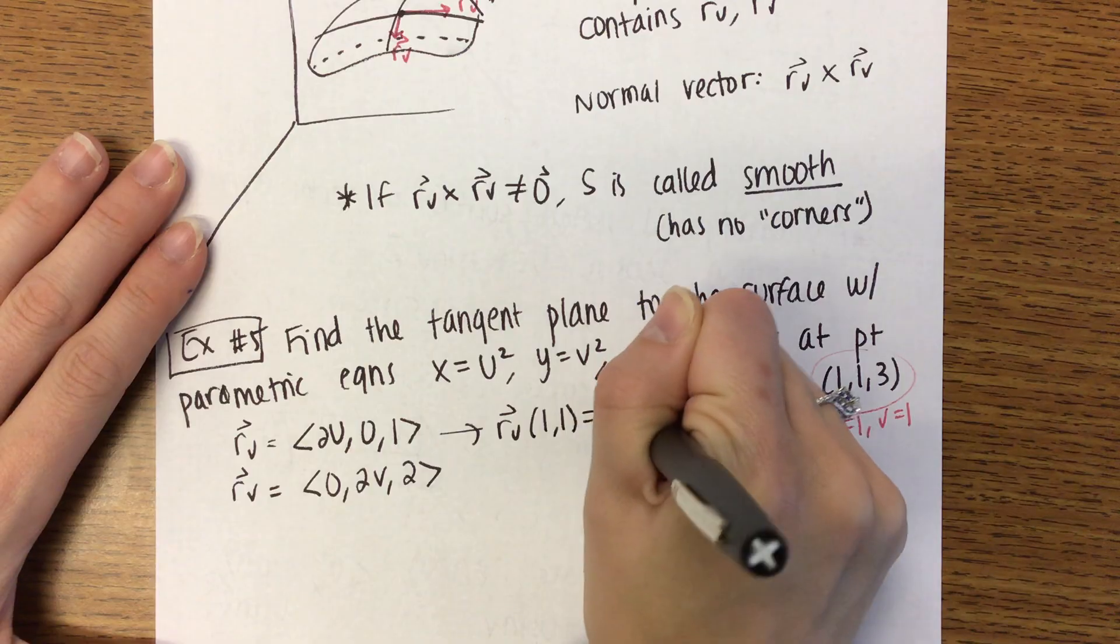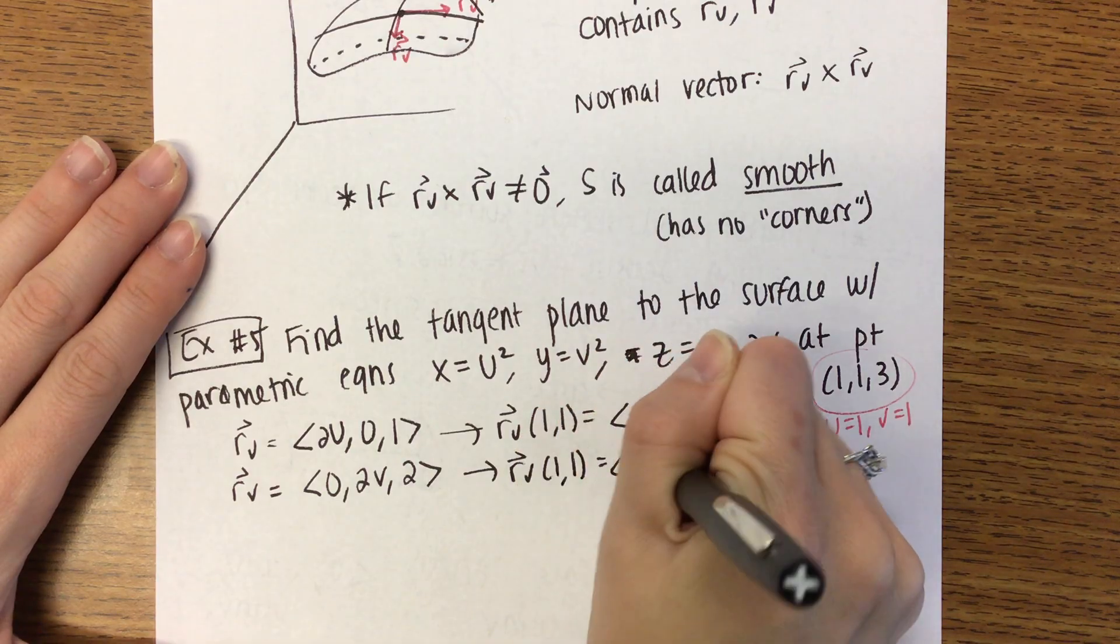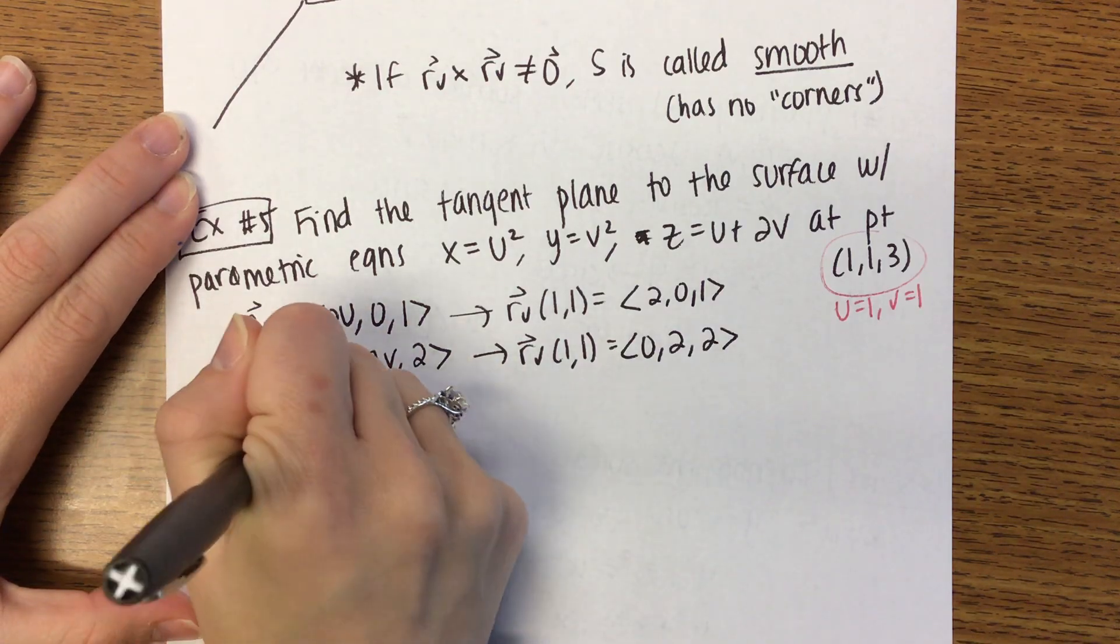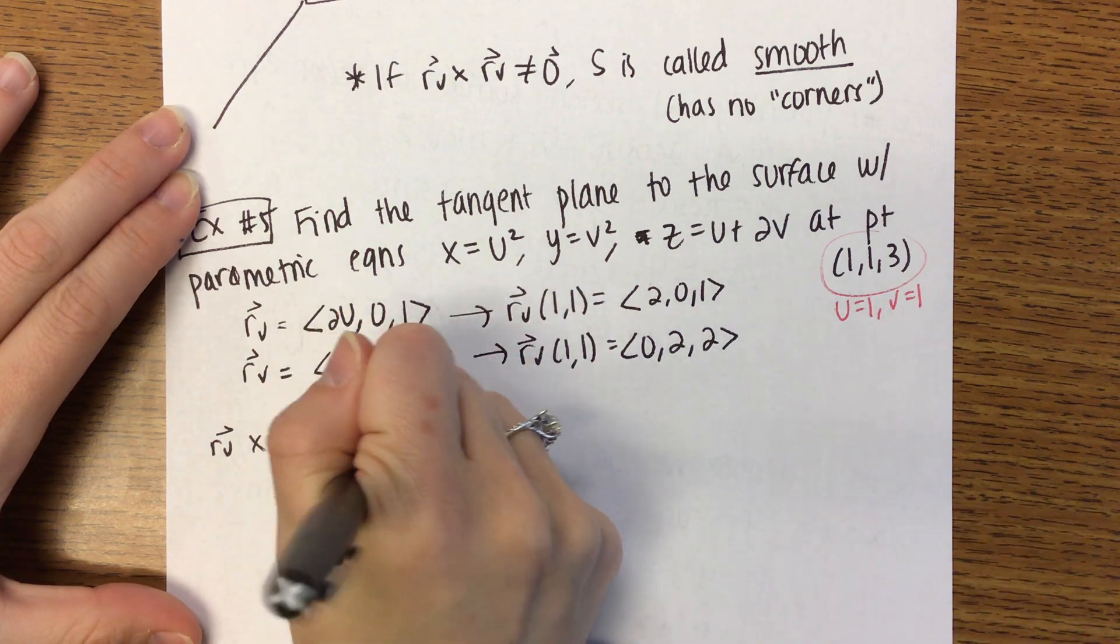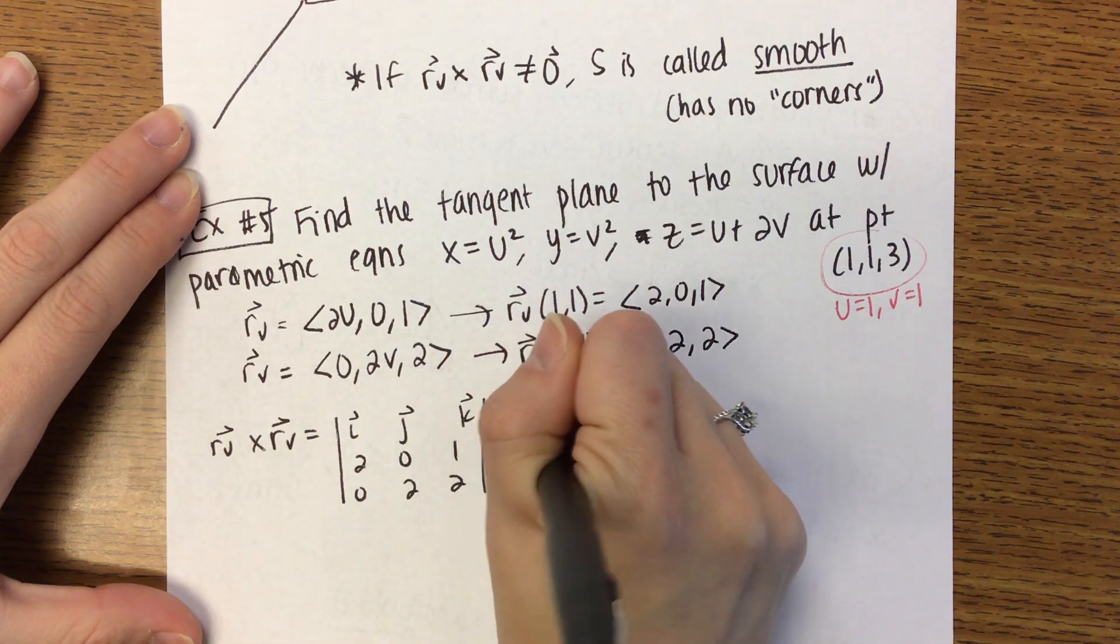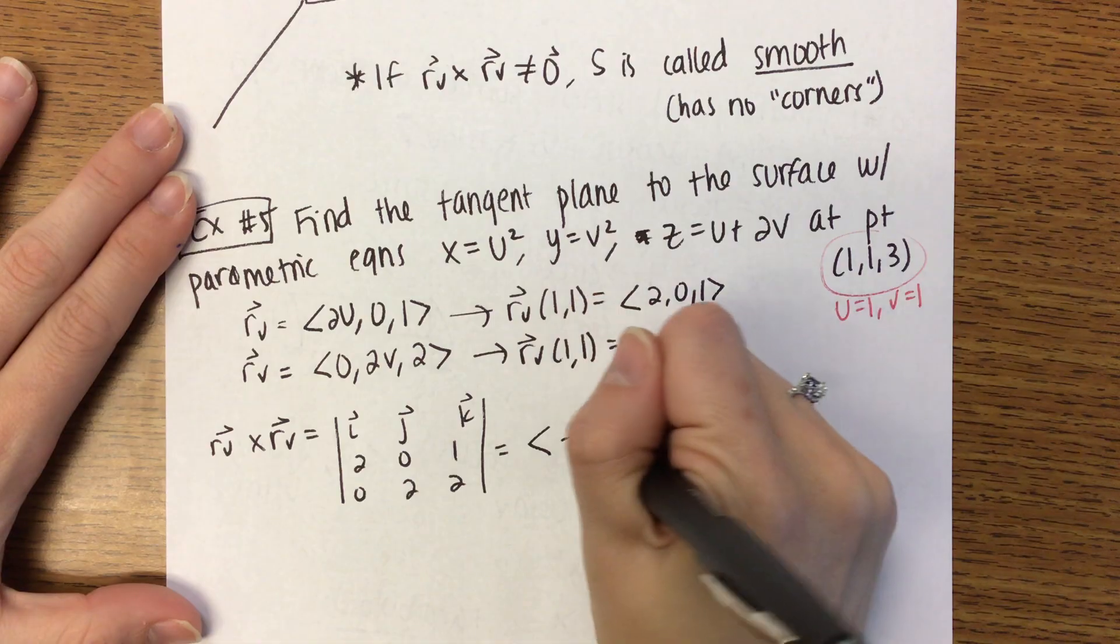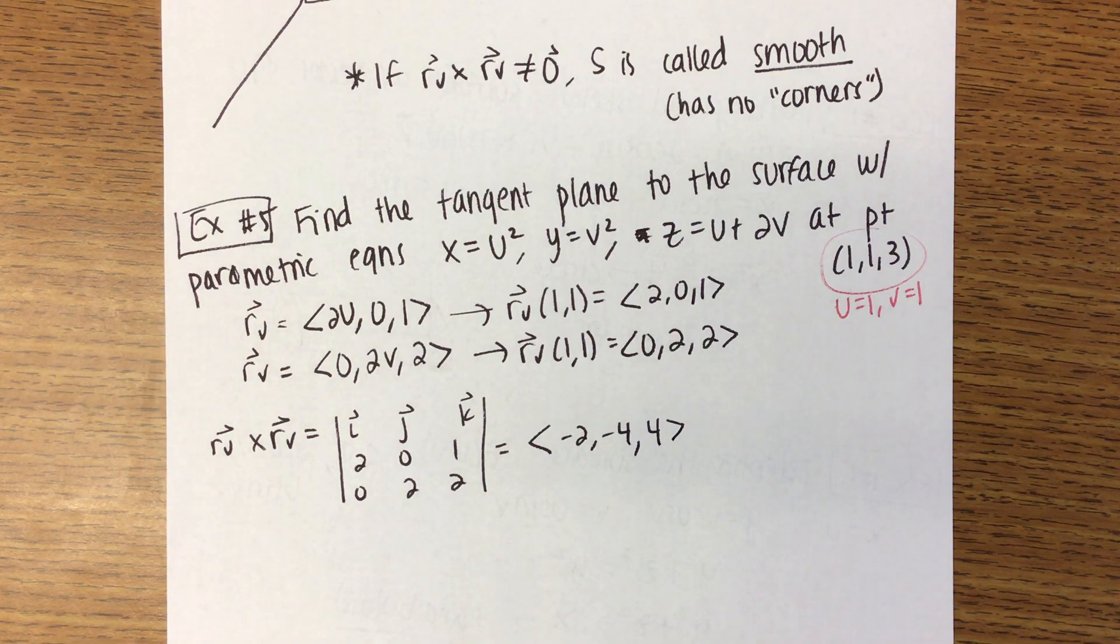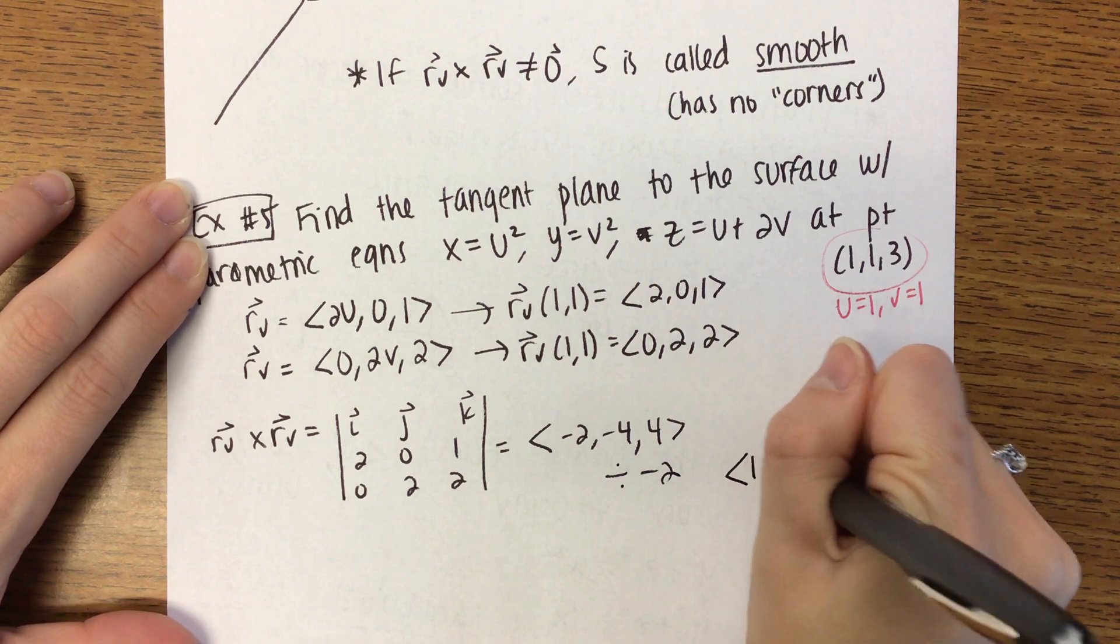So plug that in. If we plug in 1, 1, we get 2, 0, 1. To r of v, if we plug in 1, 1, we get 0, 2, 2. Then we are going to cross these. When we do, we get 0 minus 2, 4 minus 0 but then switch the sign, 4 minus 0. Do you guys agree with me? Remember that you can divide out a constant if you want to. So I would divide out negative 2 so that we get 1, 2, negative 2. You don't have to, but that's what I would do.